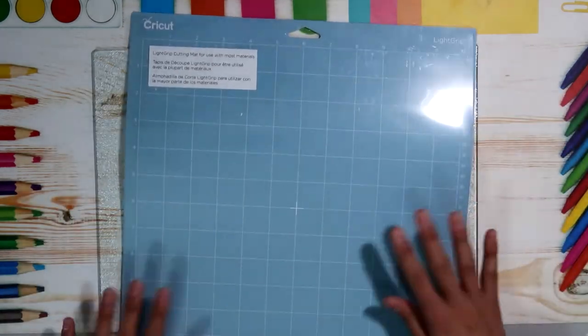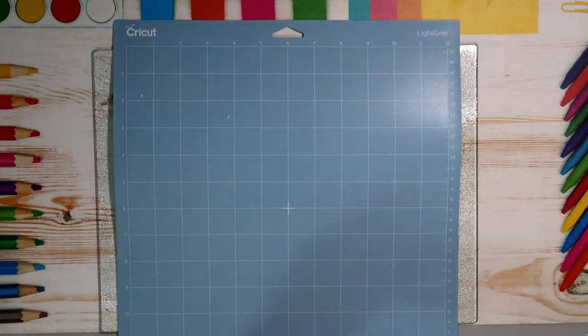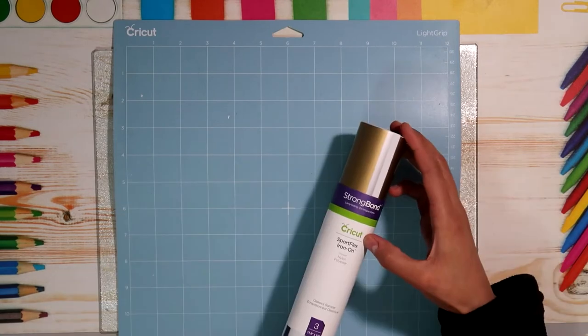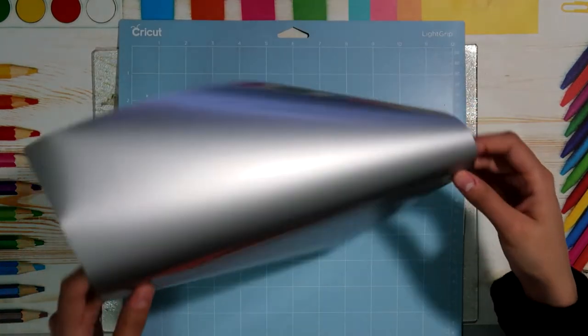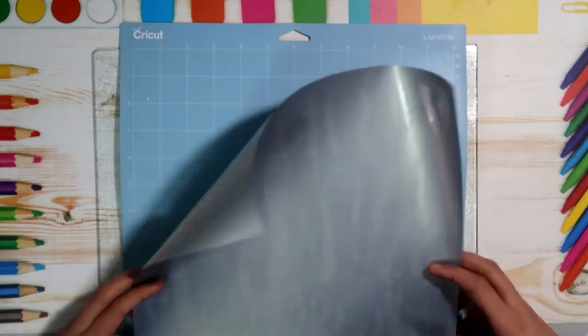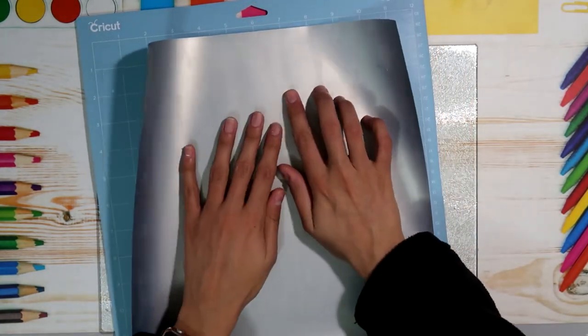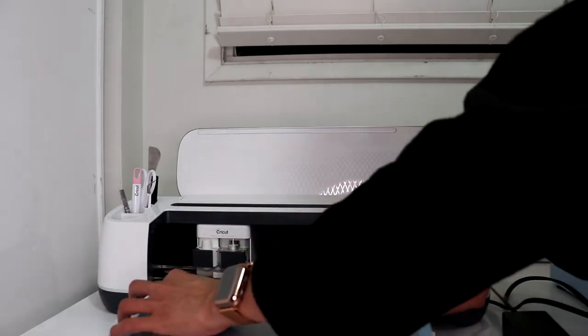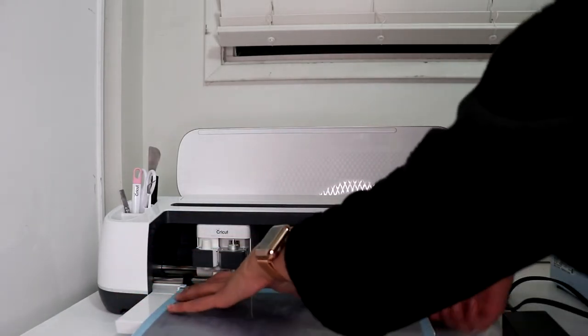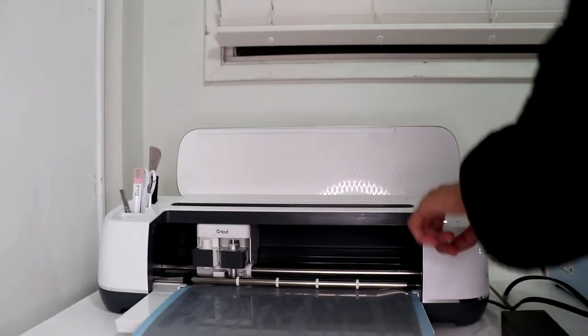I'm gonna get my Cricut mat here ready. And use my... I'm using this Cricut Sport Flex iron on. And shiny side facing down. Place it on the mat. And now I'm gonna place it on my Cricut machine. Right here.